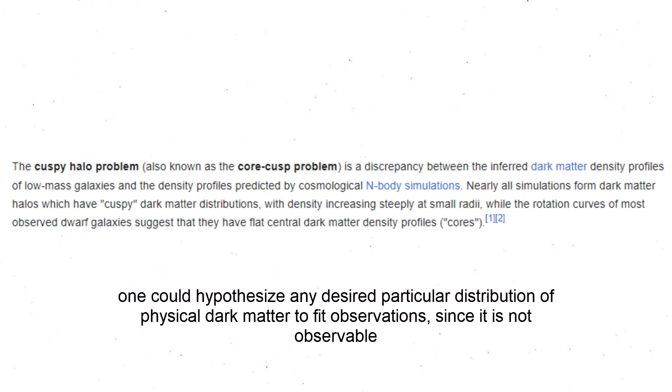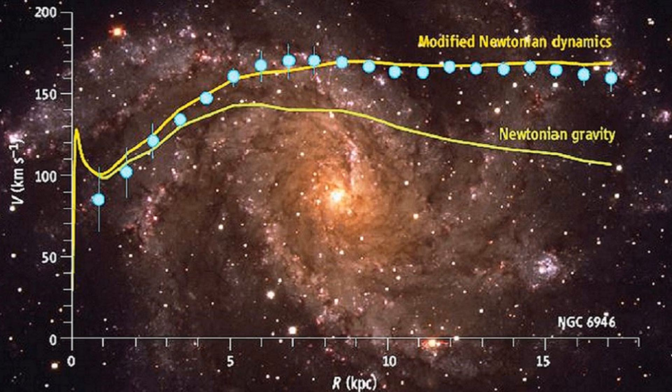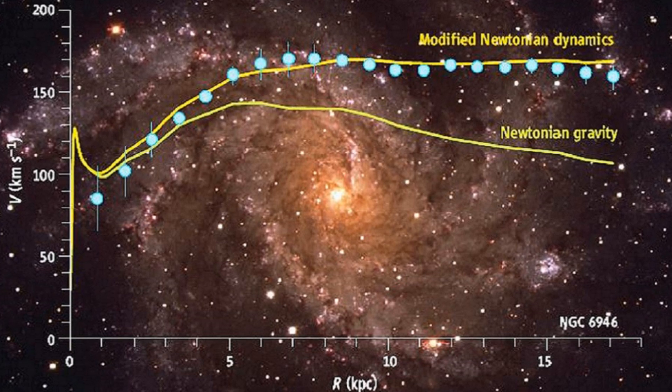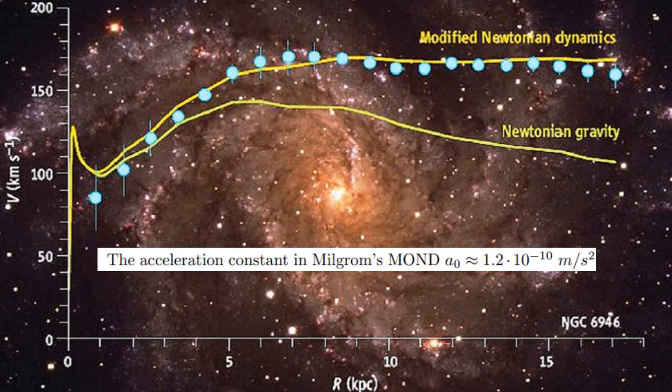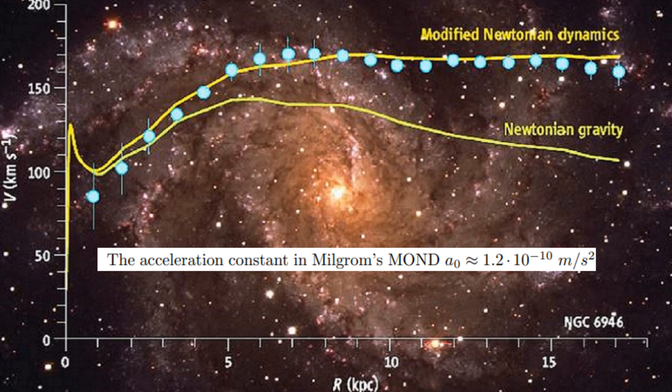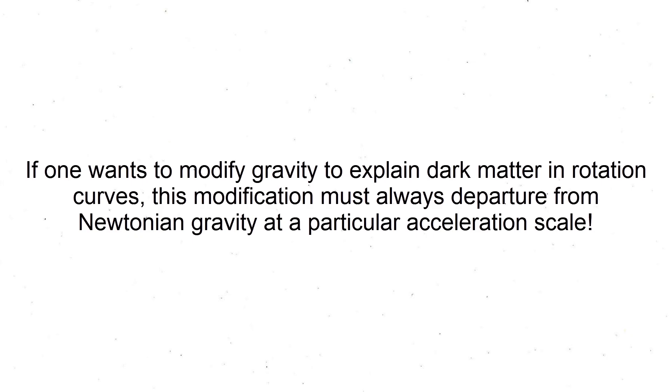Of course, one could hypothesize any desired particular distribution of physical dark matter to fit observations since it is not observable. MOND fits the data with a single free parameter, its acceleration constant, in contrast to physical dark matter models which have many more.